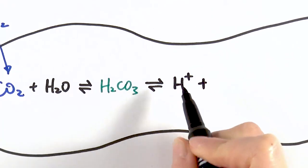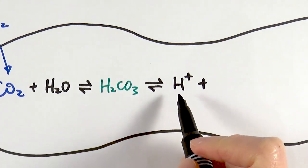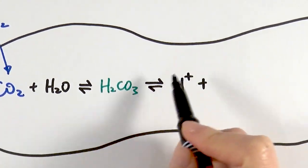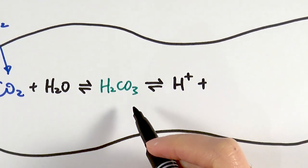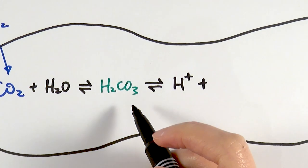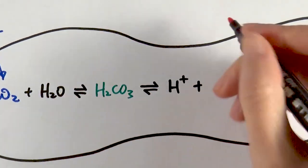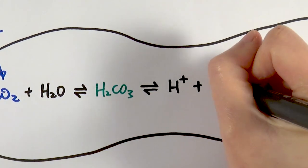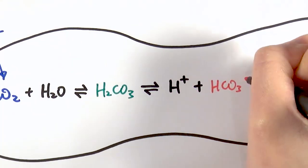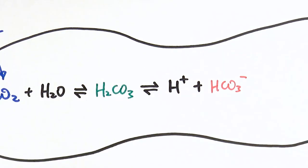For something to be acidic it must produce hydrogen ions — if it can't make hydrogen ions then it's really not an acid. So carbonic acid breaks down into one hydrogen ion, and the remainder combines to form hydrogen carbonate ions, HCO₃⁻. This is the ultimate form in which carbon dioxide is transported.